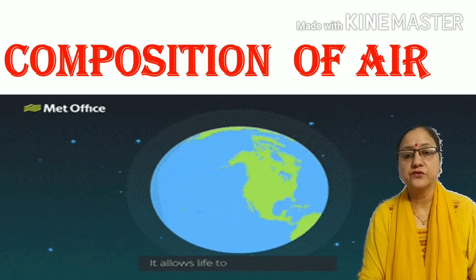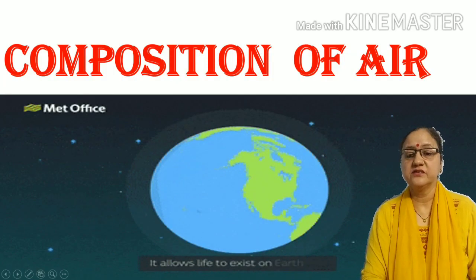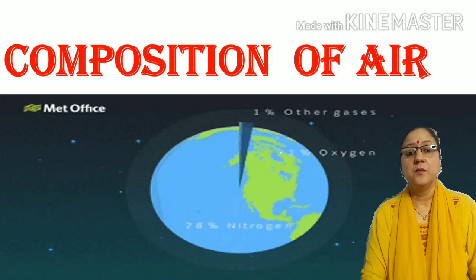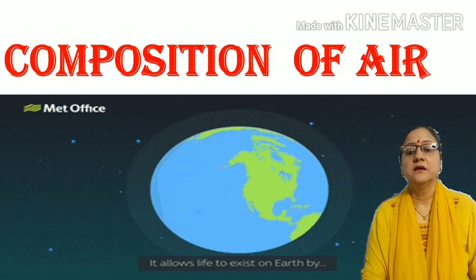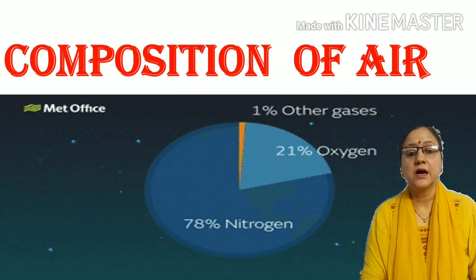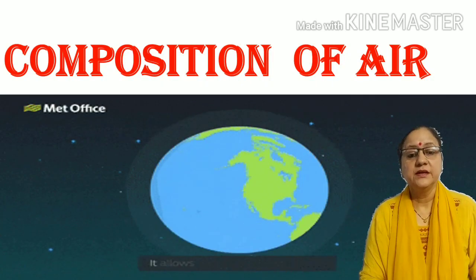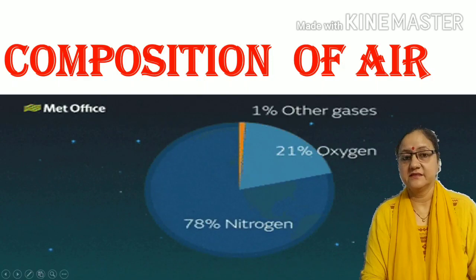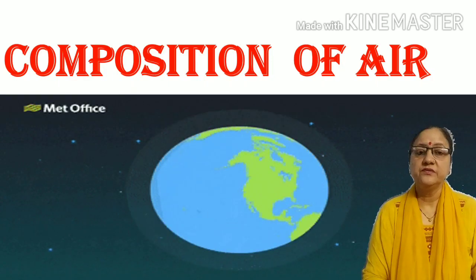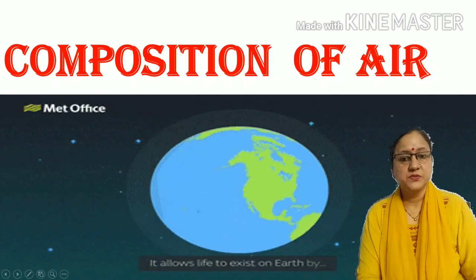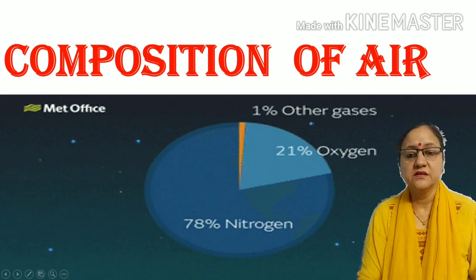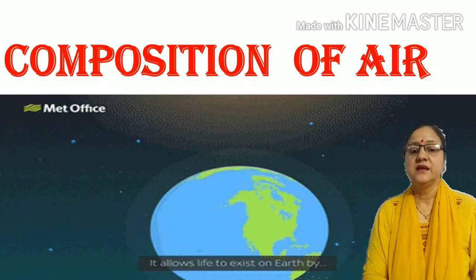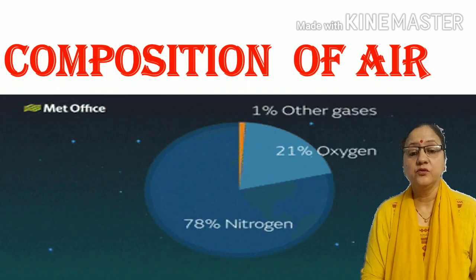The atmosphere is composed of several gases, water vapor, dust particles, etc. The important gases are nitrogen, oxygen, carbon dioxide, neon, and helium. In volume, nitrogen makes up 78%, oxygen 21%, and the rest 1%. But they are all very useful to us.